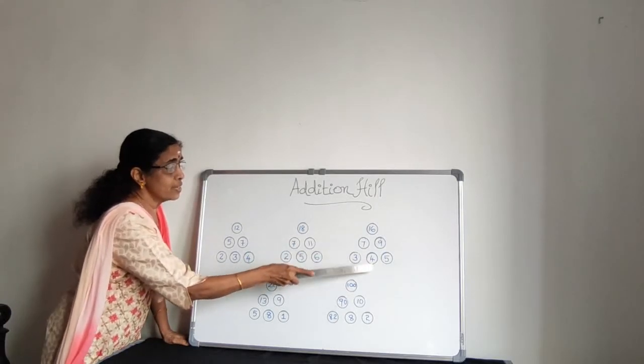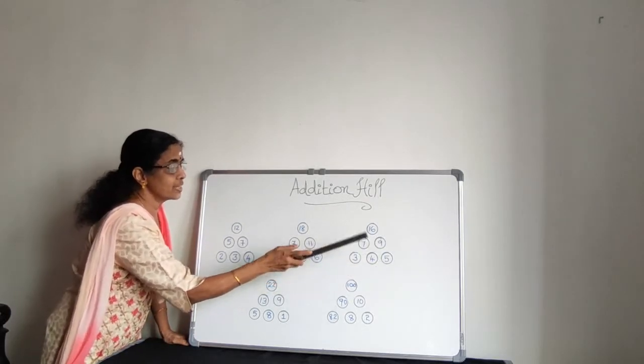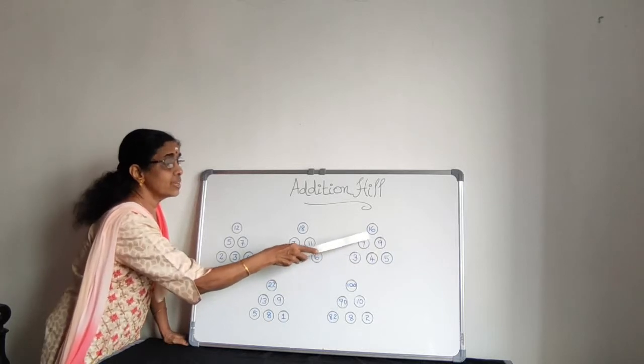Next one. 3 plus 4 makes 7. 4 plus 5 makes 9. 7 plus 9, we are getting 16.